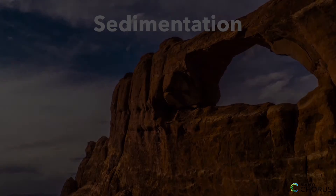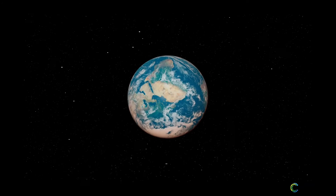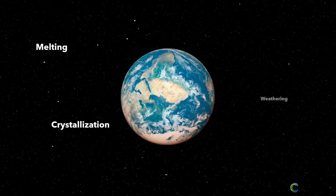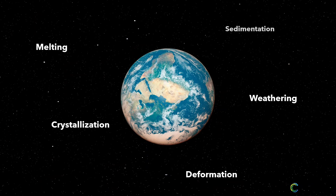So, in short, the earth is like a giant kitchen where different processes like melting, crystallization, weathering, deformation, and sedimentation mix and cook different materials to make new things — just like how you mix ingredients to make a cake.